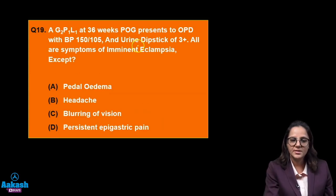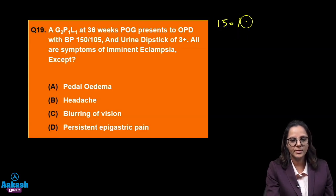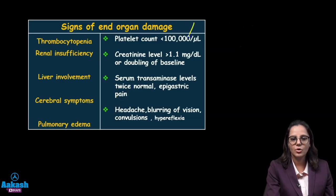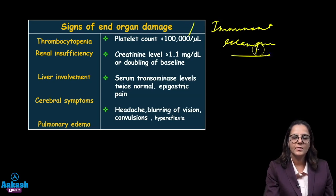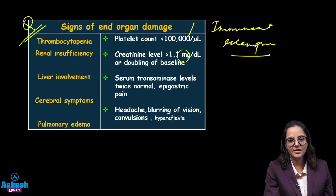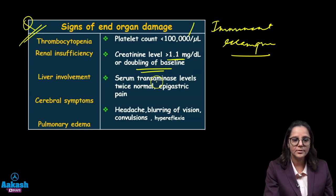A second gravida at 36 weeks presents to OPD with blood pressure 150 by 105 and urine dipstick 3 plus — which means she is preeclamptic. All are symptoms of imminent eclampsia except? The signs of end-organ damage and imminent eclampsia are the same. Thrombocytopenia: platelet count less than 1 lakh. Renal insufficiency: creatinine more than 1.1 or doubling of baseline. Liver involvement: serum transaminase twice the normal, plus epigastric pain.